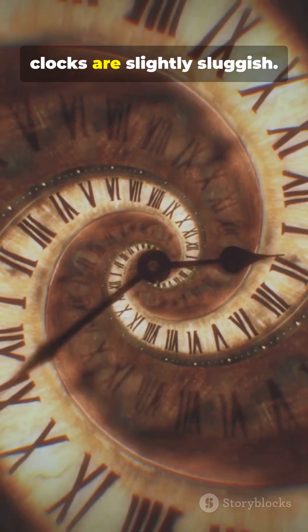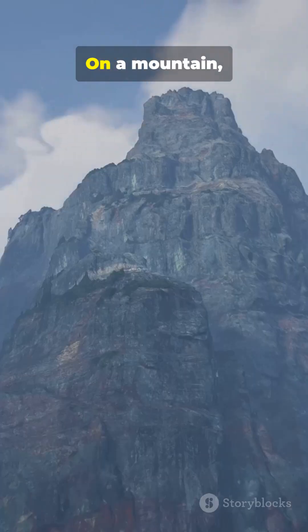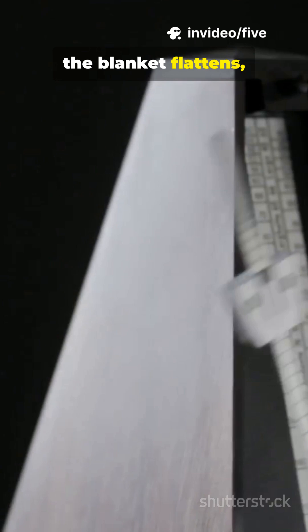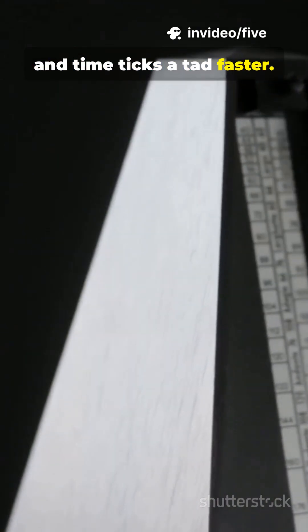So in a valley, clocks are slightly sluggish. On a mountain, you're farther from Earth's heavy pull. The blanket flattens, and time ticks a tad faster.